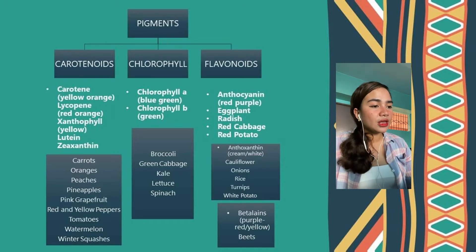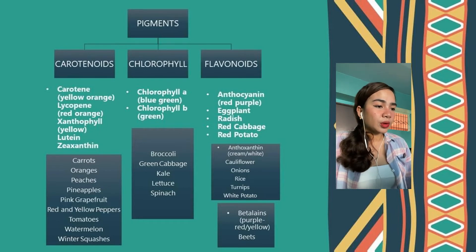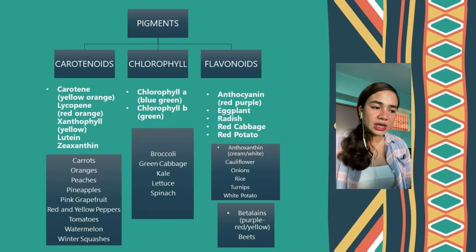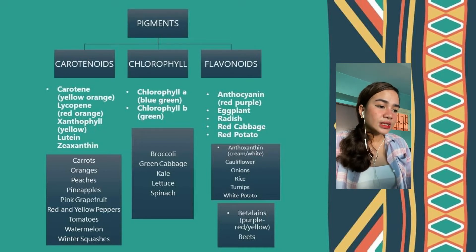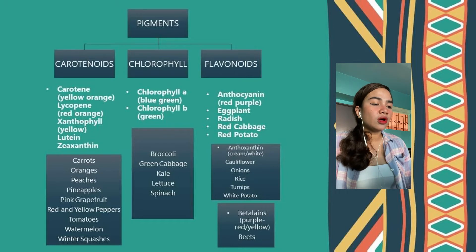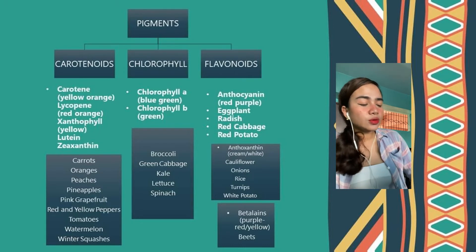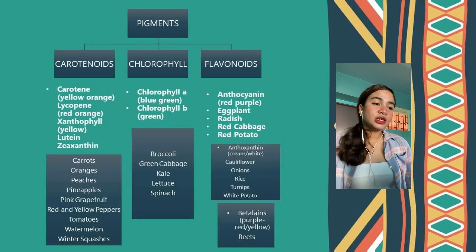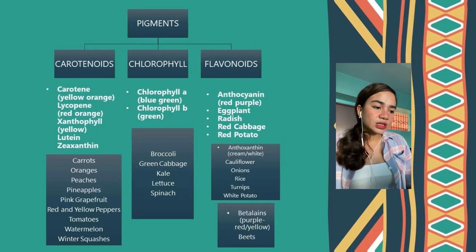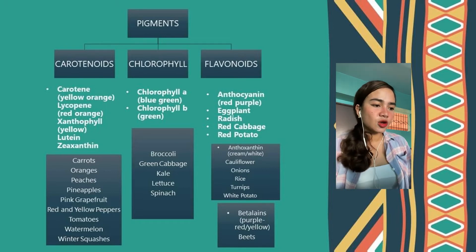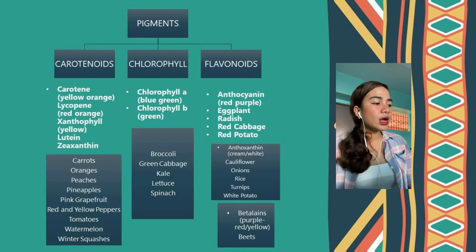Next we have the flavonoids, or anthocyanin, which is more of a red-purple color. Examples include eggplant, radish, red cabbage, and red potato. Another type of flavonoid is anthoxanthin, which is more of a cream or white color. Examples include cauliflower, onions, rice, turnips, and white potato. Another type of flavonoid is betalains, which is purple, red, or yellow. One example is beets.